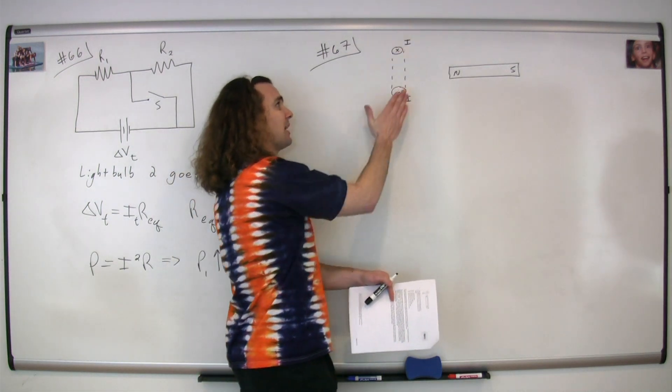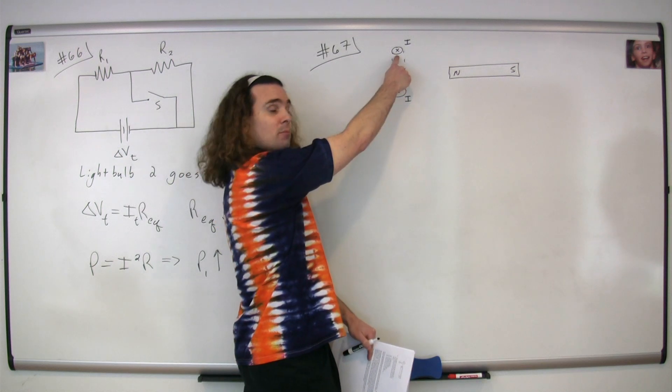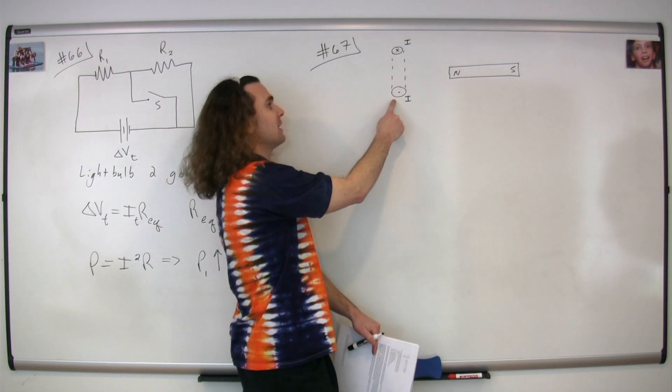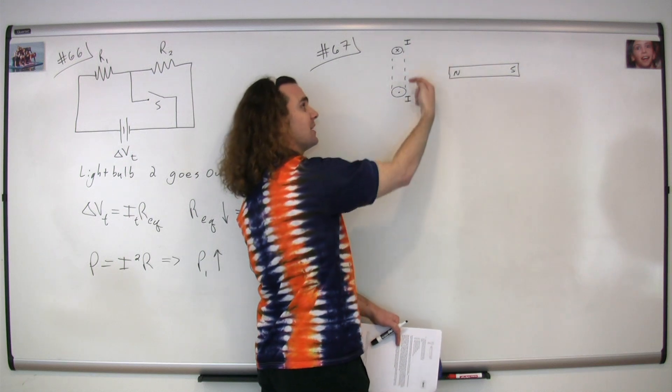So basically what I've done is I've drawn a cross-section of the loop and I've drawn that the current is going into the board up here and out of the board right here. So this current is going in the loop in circles like this.